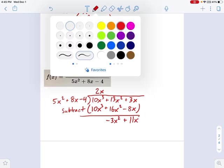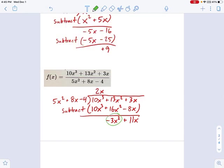So now I start the process all over again. I say, what is the result of negative 3x squared divided by 5x squared? It's kind of weird.